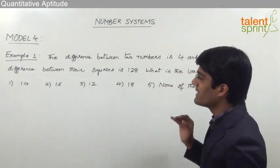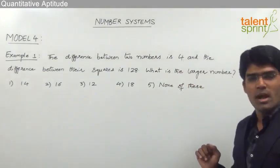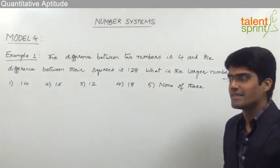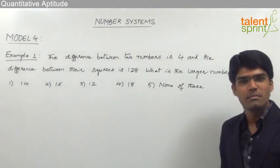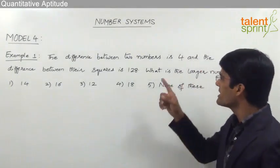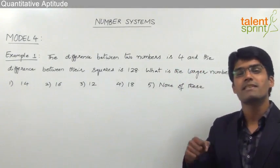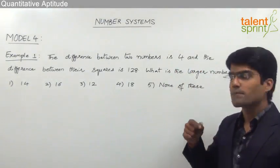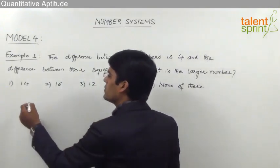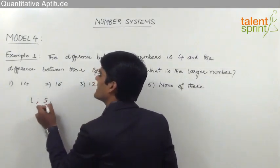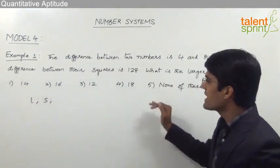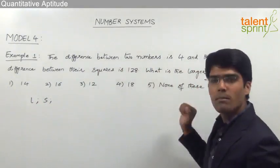The question is: the difference between two numbers is 4 and the difference between their squares is 128. What is the larger number? Let us assume the two numbers are L (larger) and S (smaller). As given, the difference between the two numbers is 4, so L minus S equals 4.